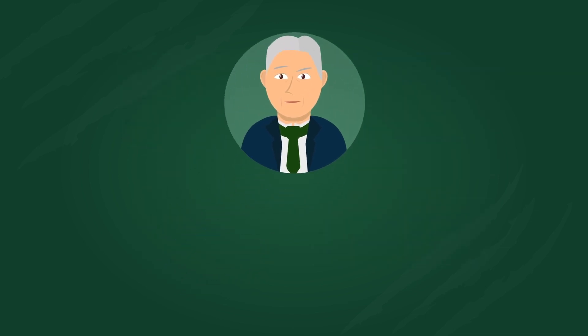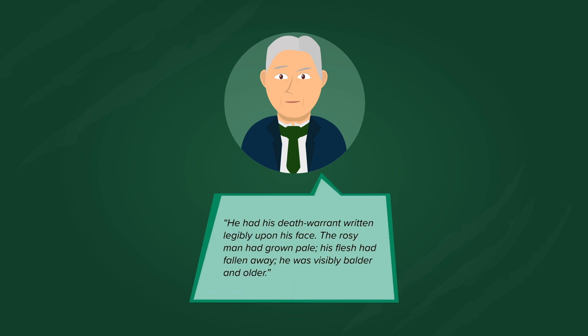In Chapter 6, 'Remarkable Incident of Dr Lanyon', Utterson visits Dr Lanyon, who is suddenly very ill. We are told 'he had his death warrant written legibly upon his face. The rosy man had grown pale. His flesh had fallen away. He was visibly balder and older.' Lanyon explains that he has had a shock that will kill him in weeks, and it is clear that it has something to do with Jekyll.